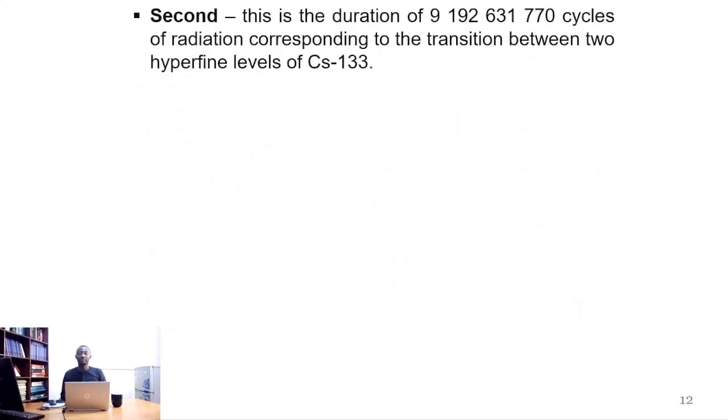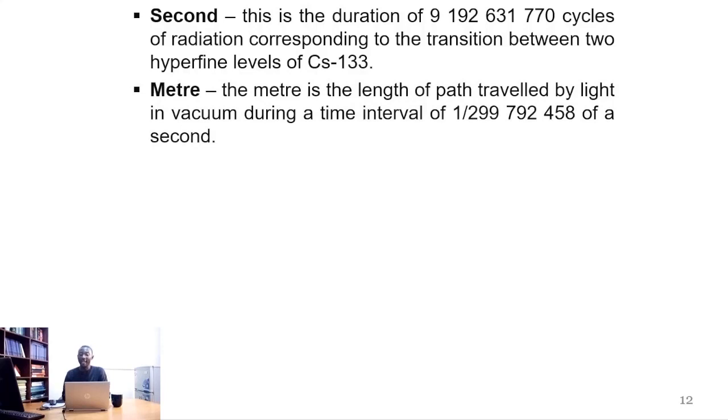Let's define the seven fundamental physical units. The second is the duration of 9,192,631,770 cycles of radiation corresponding to the transition between two hyperfine levels of Cesium-133. Meter is the length of path traveled by light in vacuum during a time interval of 1/299,792,458 of a second.